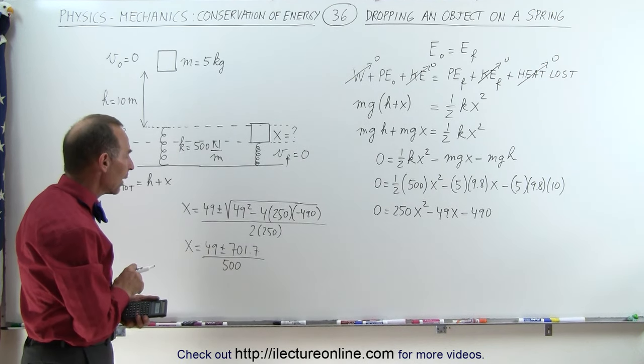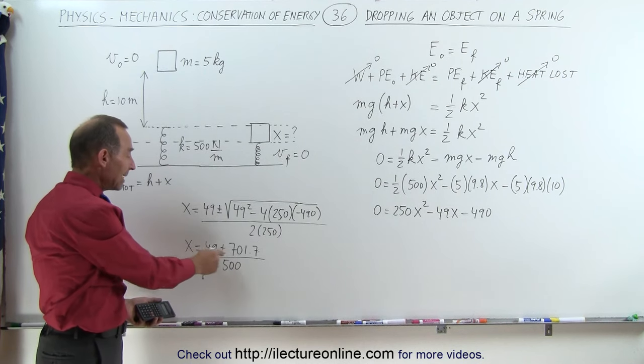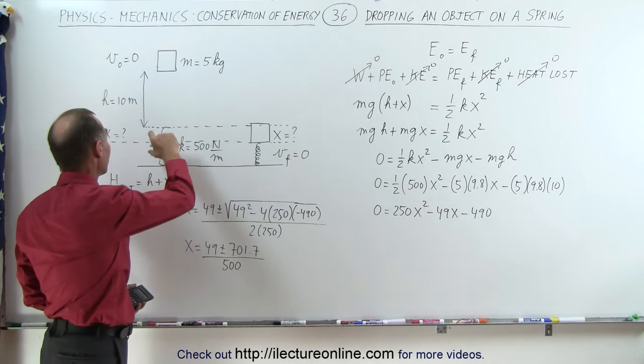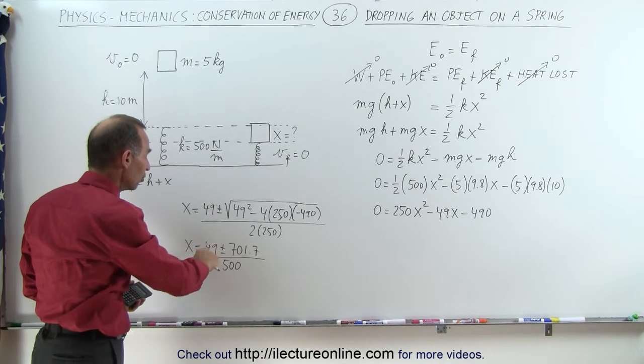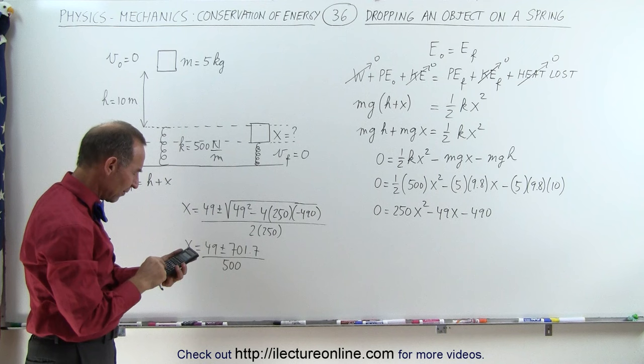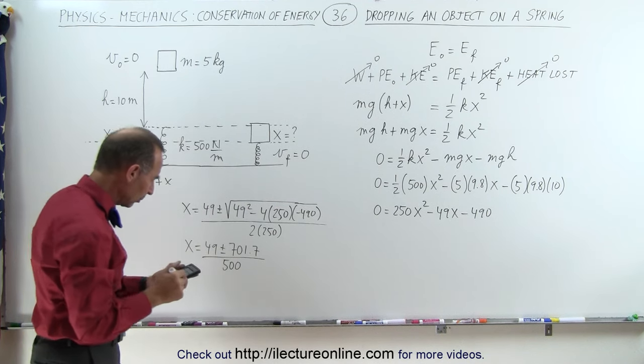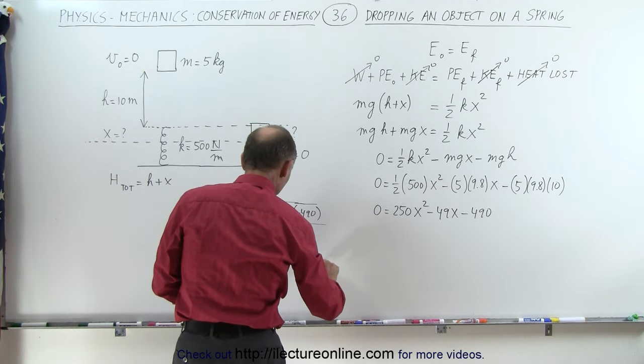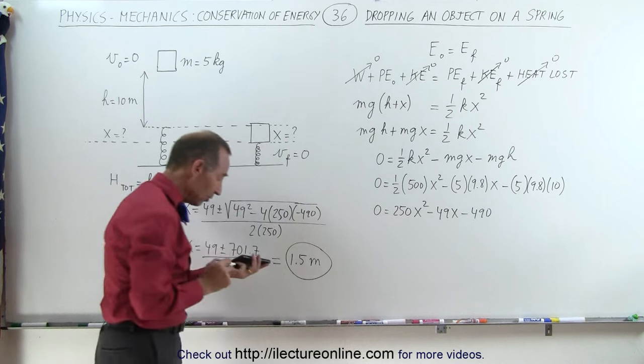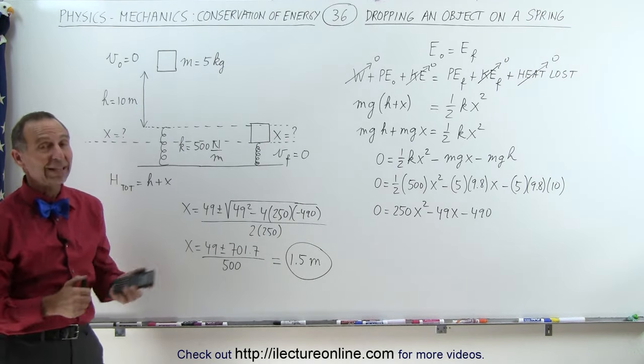All right so I don't think the negative is one possible answer because x would then be a negative distance and we can only have a positive distance here. So that means the only viable solution would be when I add those two together. So if I add plus 49 and then divide that by 500 the only possible solution is that x is equal to 1.5 meters. And that is the only real possible answer for this particular problem and that's how it's done.